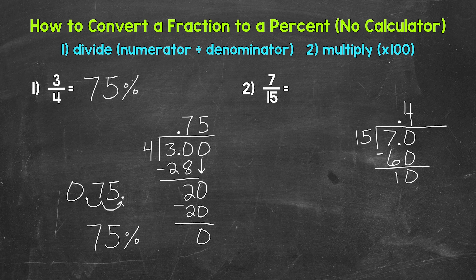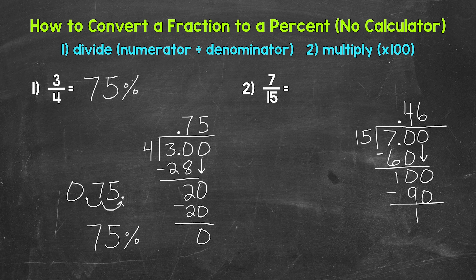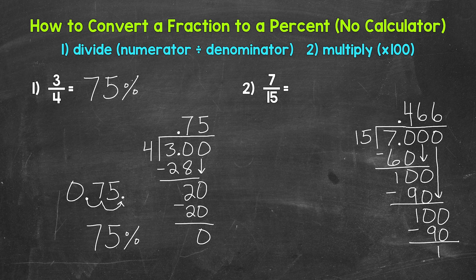We don't have that clean cut zero, so let's use another zero that we can bring down. Now we have 100. 100 divided by 15 — how many whole groups of 15 in 100? Six — that gets us to 90. Multiply six times 15 is 90. Subtract — 100 minus 90 is 10. We still don't have that clean cut zero, so let's use another zero and bring it down. We have 100 again. 100 divided by 15 is six again, six times 15 is 90, subtract — we get 10 again. You may notice that we have a pattern here.